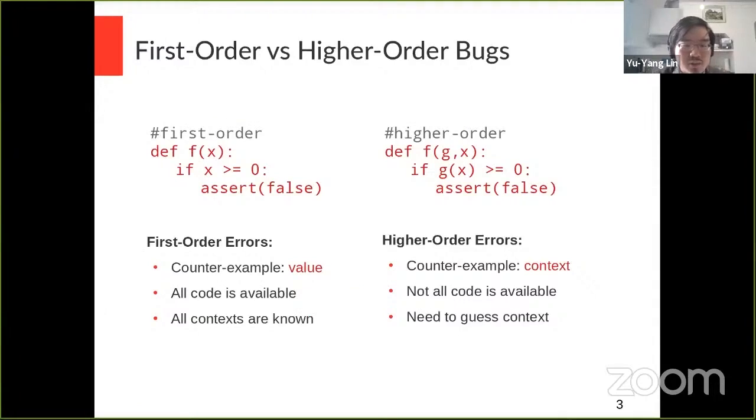To expand a bit on the higher order errors. Here is the intuition for what makes higher order errors difficult to handle. On the left, I have an instance of a first order bug. I'm checking this program for errors. It's a matter of finding a ground type value for X that may cause an error. In this case, any integer above zero would do. Note that this is a closed program in the sense that the only free variables are of ground type, therefore all code is known. So there's no unknown code. As a result, all contexts are also known. The only missing part is a ground type value.